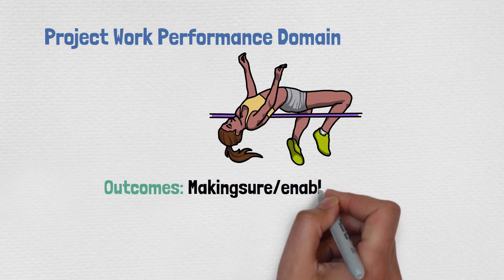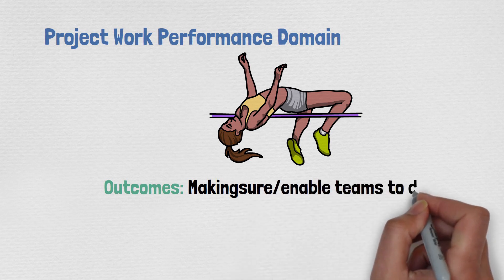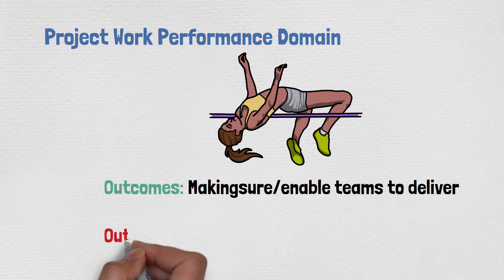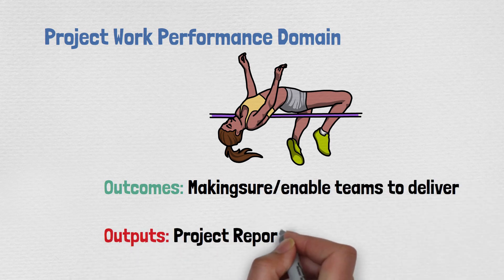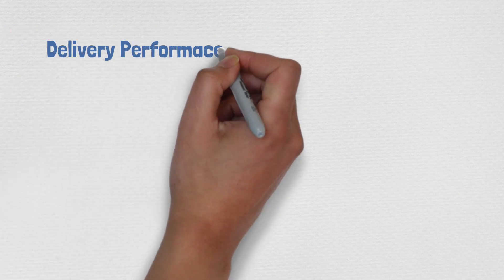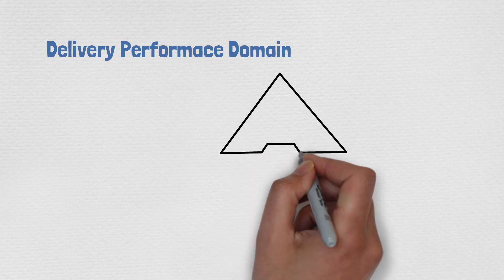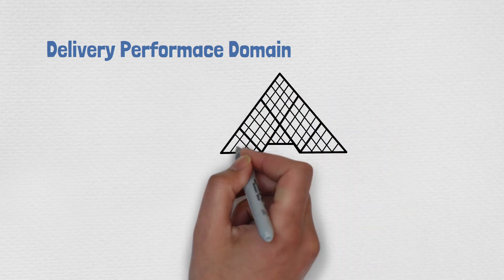The Project Work performance domain addresses the activities and functions associated with project processes, managing physical resources, and fostering the learning environment. The outcome is enabling the team to deliver. The outputs from PMBOK 6 are all about project reports.